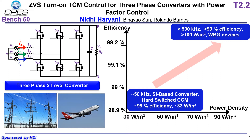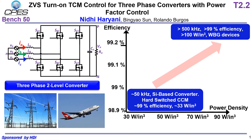The question comes in: why do we need zero voltage switching turn-on? When we look at efficiency versus power density, we can see that we can achieve almost 99% efficiency even with hard-switch CCM at 50 kHz switching frequency. But when we target higher switching frequencies to achieve high power density, we need soft switching. High frequency reduces the size of magnetics a lot, but it also poses the challenge of high switching losses.